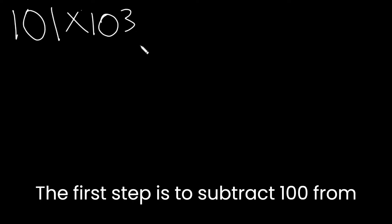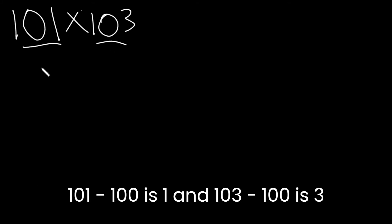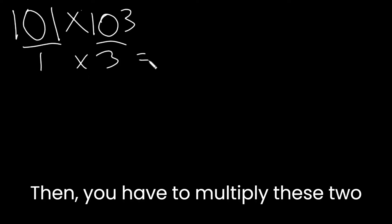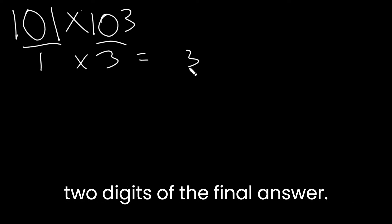The first step is to subtract hundreds from each of these numbers. 101 minus 100 is 1 and 103 minus 100 is 3. Then you have to multiply these two. This will give us 3. The answer that you get will be the last two digits of the final answer.